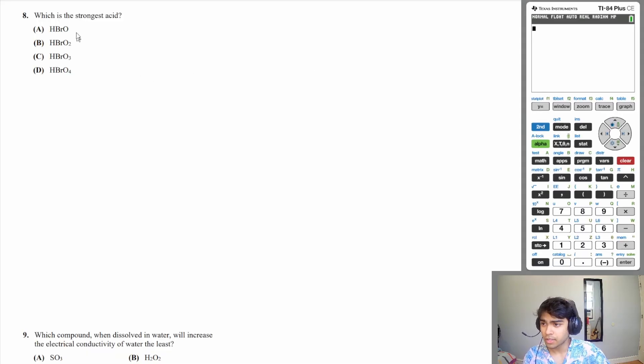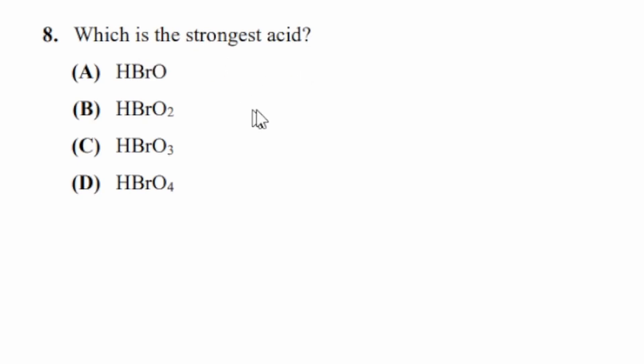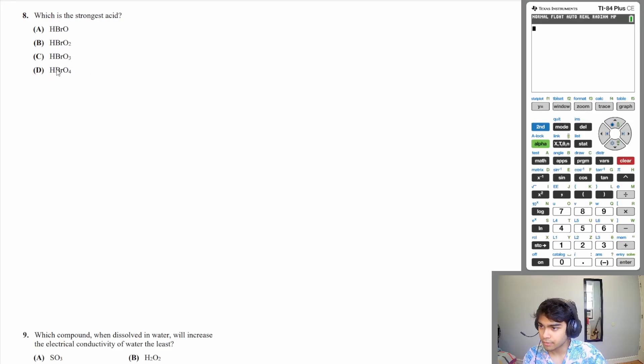All right, let's move on to 8. What is the strongest acid? And so we have a bunch of oxyacids with various numbers of oxygens. So let's draw all these out.